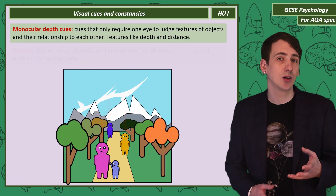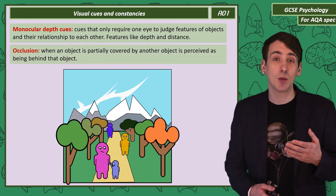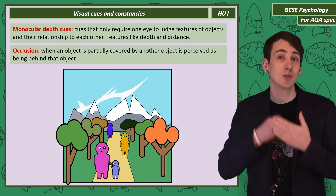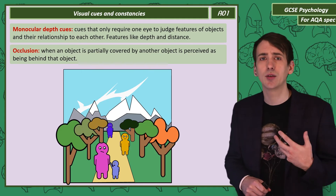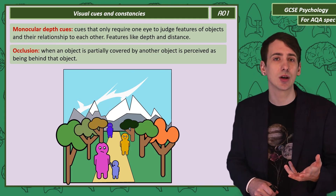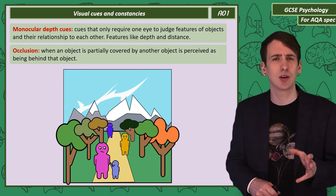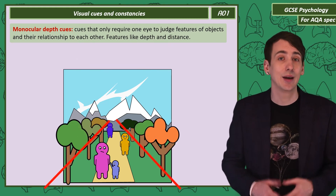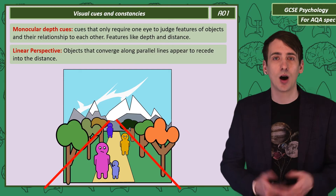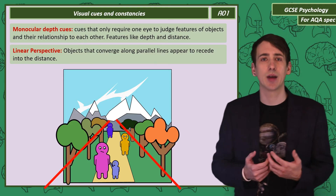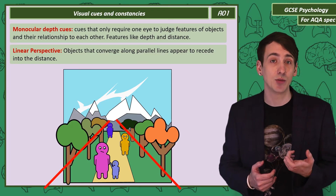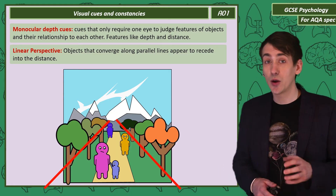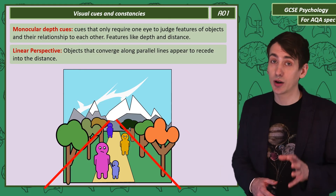Another monocular depth cue is occlusion. If an object is covered by another object, we assume it's behind it — so if I reverse the occlusion of the trees in this picture, the image suddenly makes much less sense. One final monocular depth cue is linear perspective: our brains assume that converging parallel lines and objects along them are receding back into the distance.